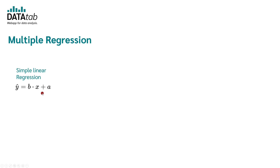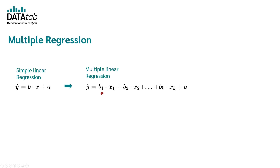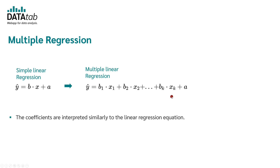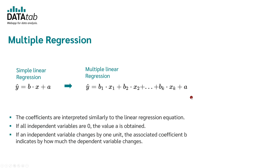In multiple linear regression, we have several independent variables: the first variable, the second variable, and up to the kth variable, each with its own coefficient. The coefficients can be interpreted similarly to the linear regression equation. If all independent variables are zero, we get the value a. If an independent variable changes by one unit, the corresponding coefficient b indicates by how much the dependent variable changes.